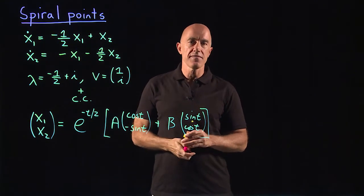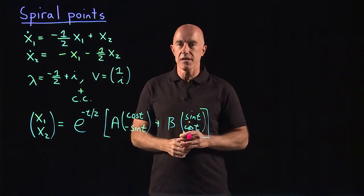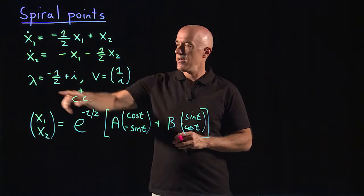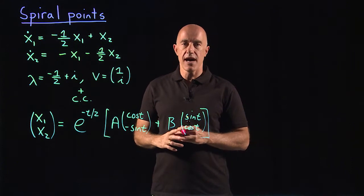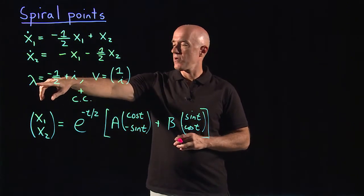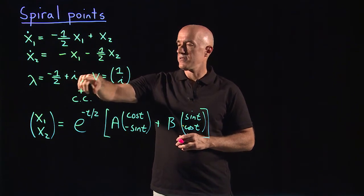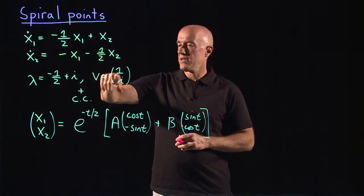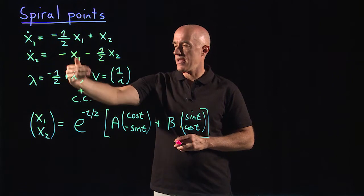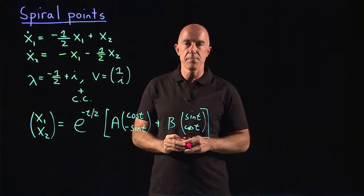If you do the eigenvalue and eigenvector analysis on that matrix, you get complex conjugate eigenvalues. So one of the eigenvalues is minus 1 half plus i, and its associated eigenvector is 1i. And then you have the complex conjugate pair.